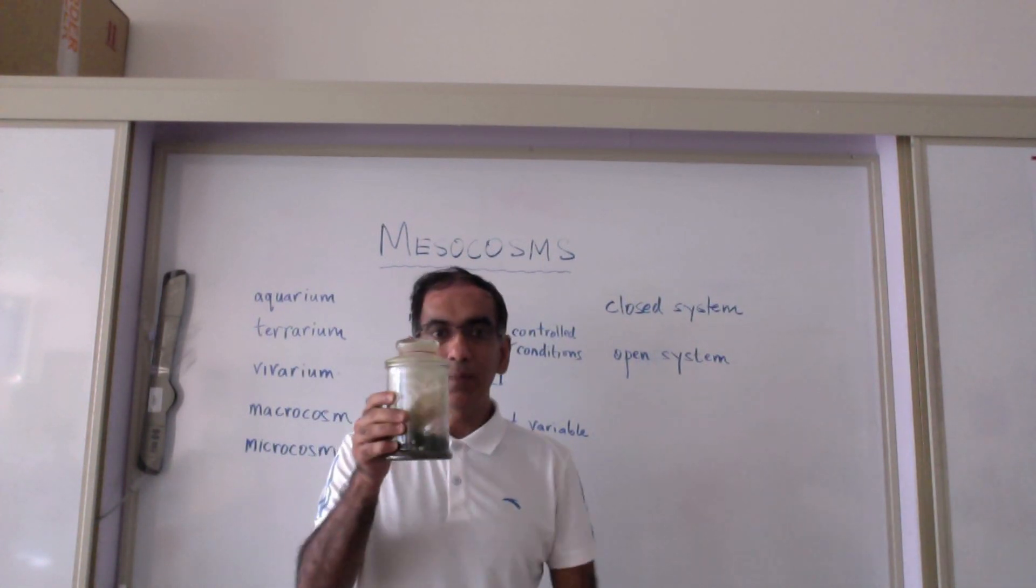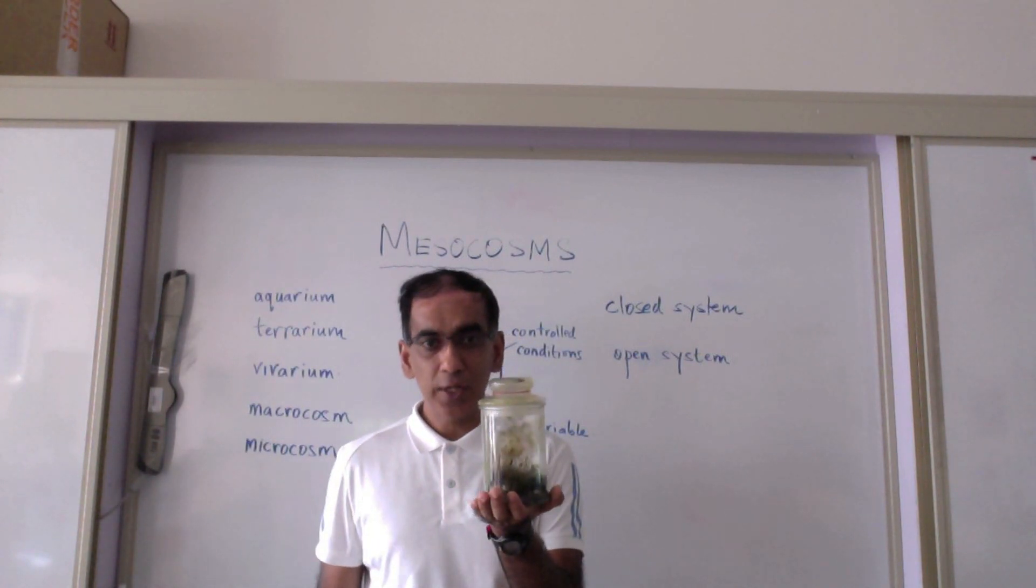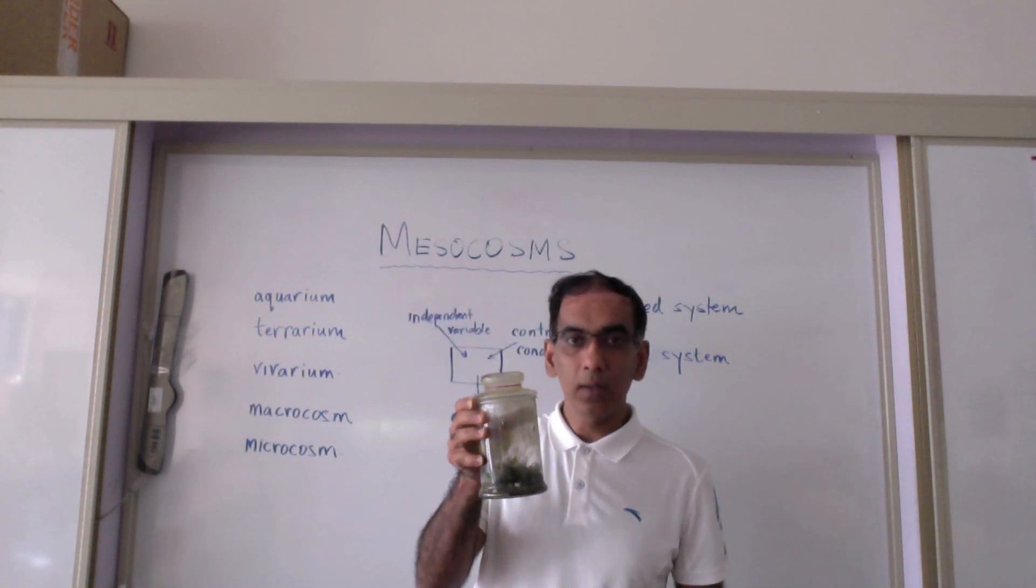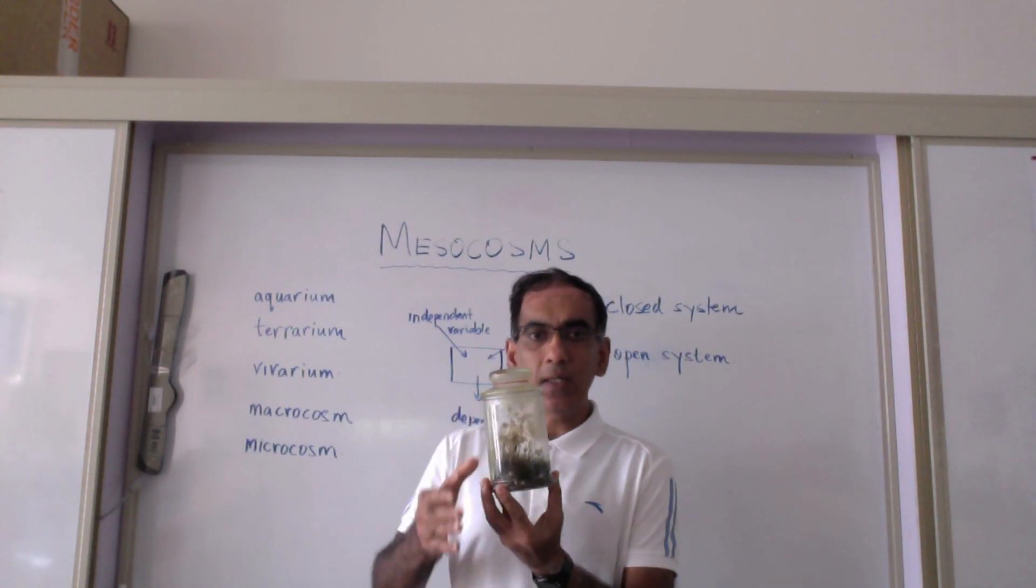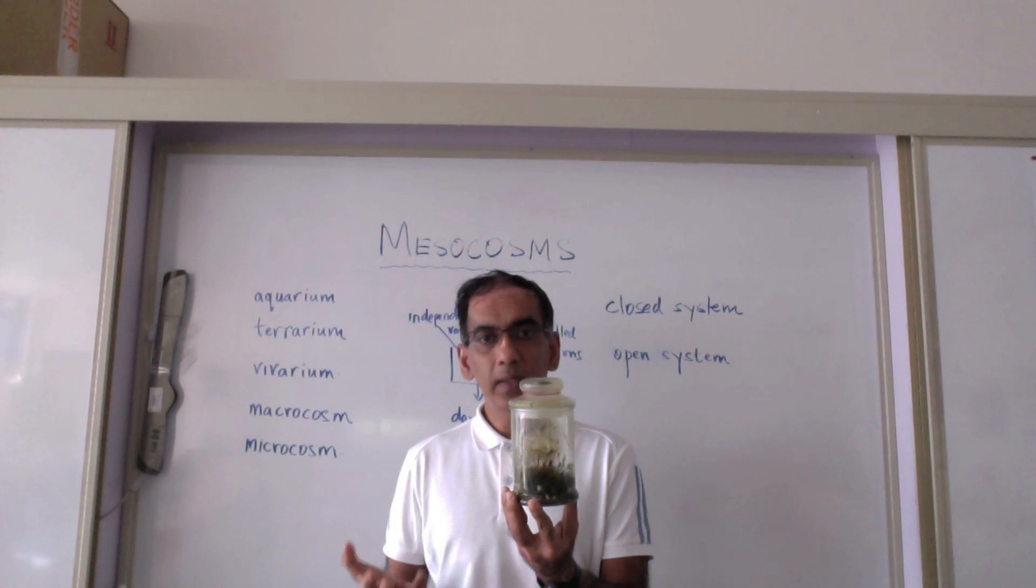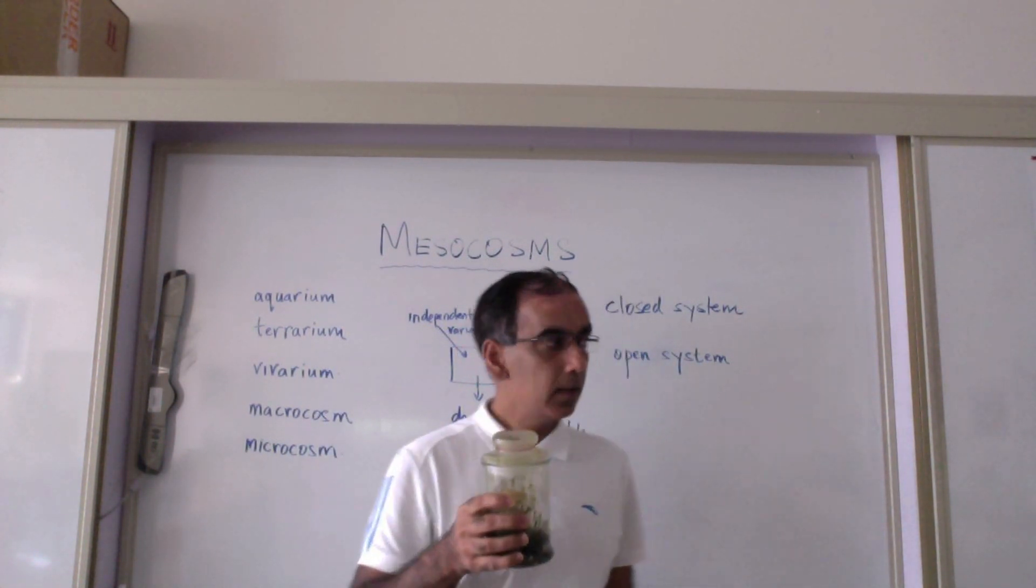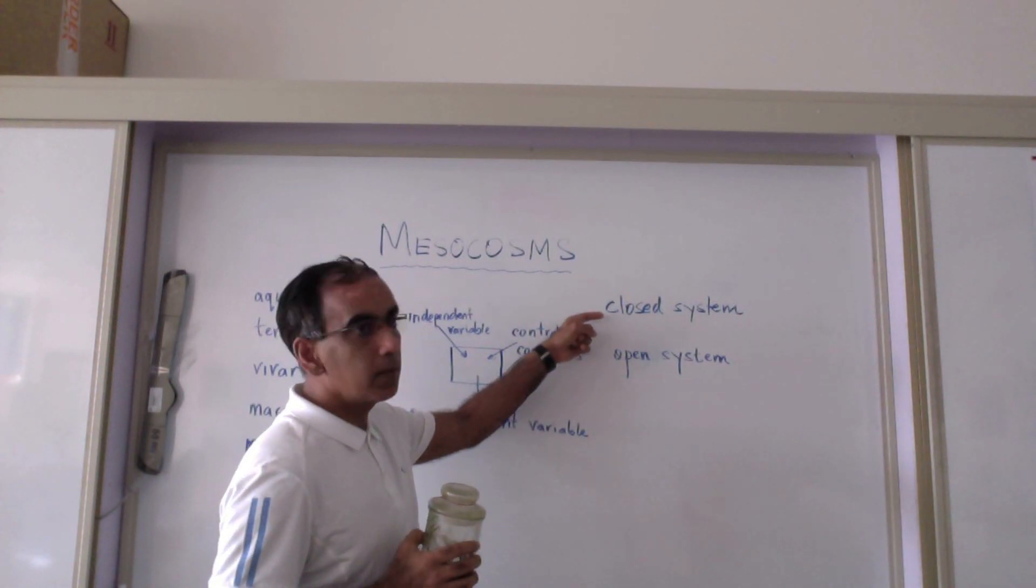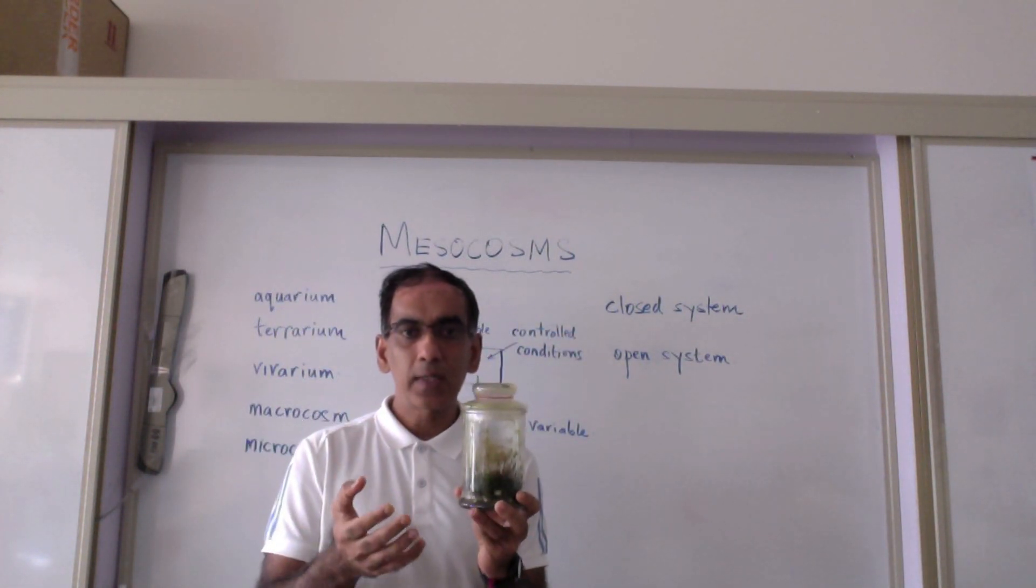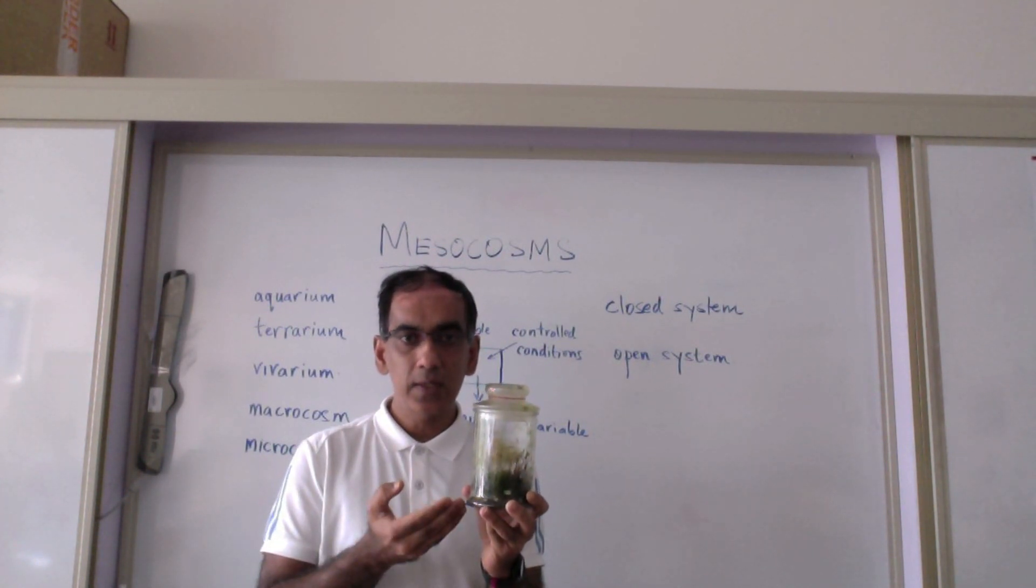Welcome again. You might have seen this model before—it's the icon for this channel. In several videos, I have used this model to explain the structure and workings of environmental systems. I've described this particular model as a closed system because it exchanges no matter with the outside and receives only light from the outside for photosynthesis.